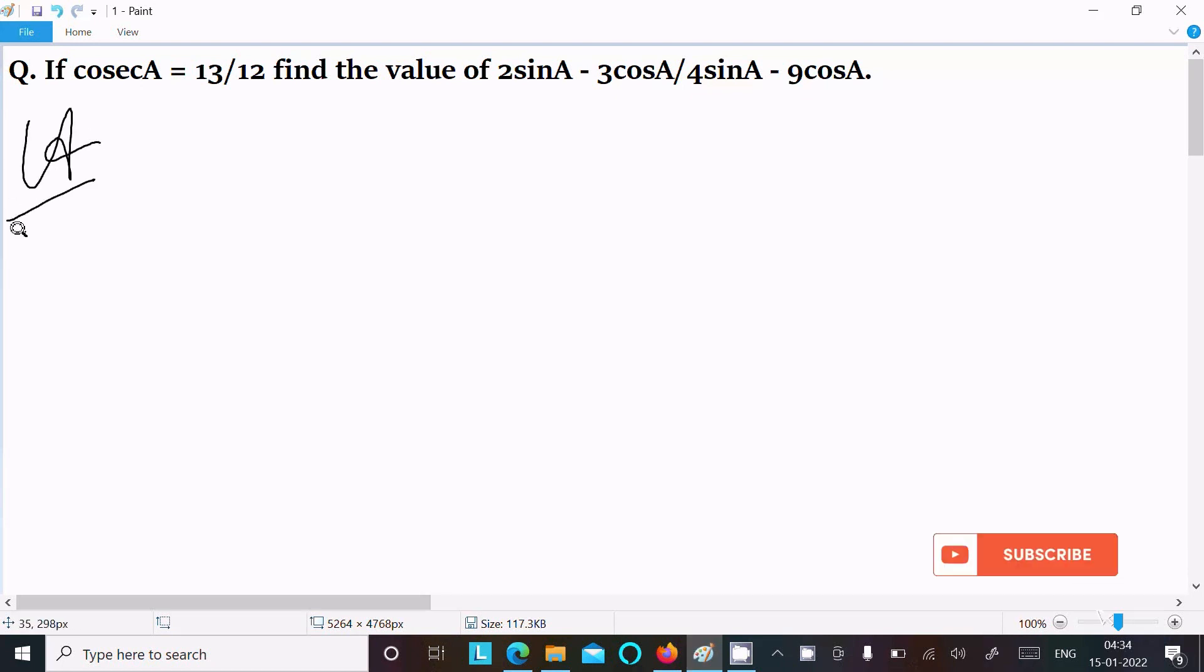First, writing the given cosecA = 13/12. We can write sinA = 1/cosecA, so sinA = 1 divided by cosecA.